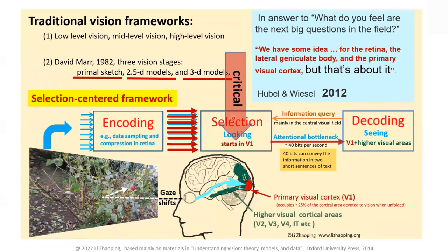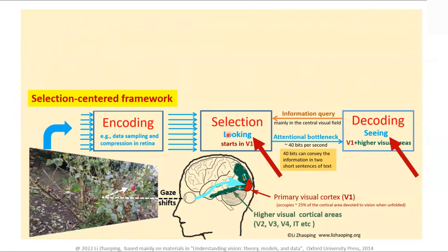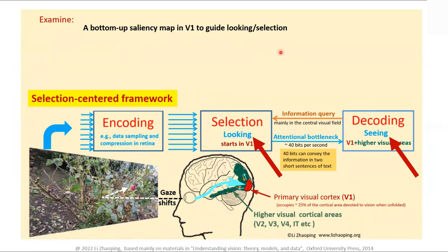It has to be falsifiable — that's a critical element that was not there before. Then there's decoding, which is more or less recognition. First you have to select what bits of signal to process, then recognize it, all in light of this selection-centered framework. Vision really is looking and seeing because selection is where you look. We're going to show that selection really starts early, at primary visual cortex. In a CNN that's not the case — you never have any bottleneck selecting only a tiny fraction of input, less than one percent.